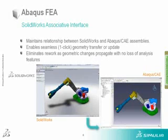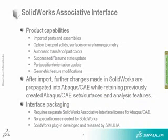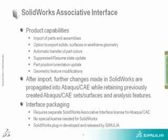It's a really seamless integration between the two products. The associative interface allows you to import parts and assemblies, and you can work with solids, surfaces, and wireframe geometry — essentially whatever you can build in SolidWorks, you can bring into Abaqus CAE. The transfer includes automatic part colors, suppress and resume state, and part positioning and orientation. Most importantly, if you make geometric changes within SolidWorks, you get those changes directly reflected in your Abaqus CAE model, making it very convenient to work in the two products simultaneously.